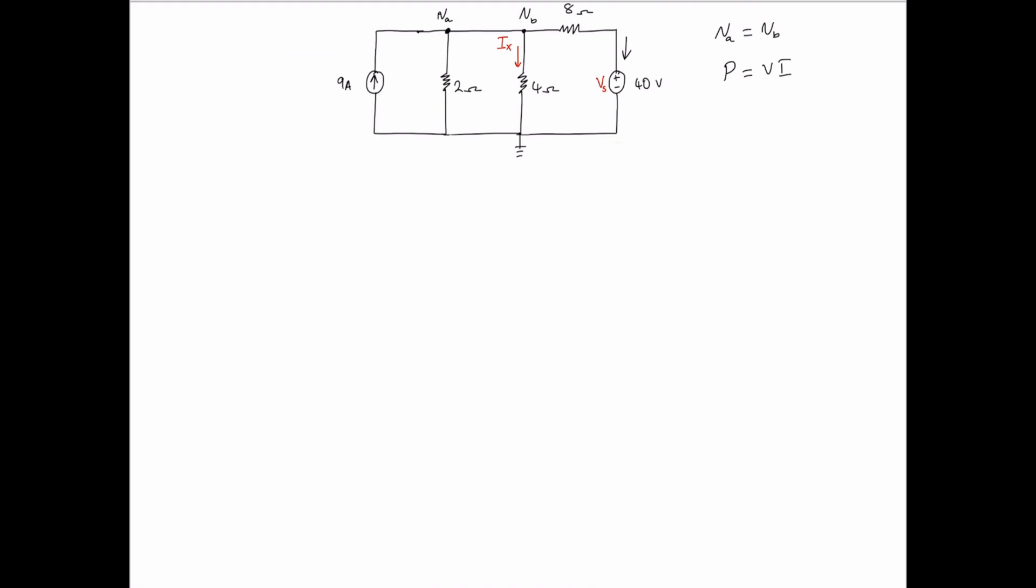And if the current flowing from the source is positive, that means the current flowing into the source is negative. So, let's call that current IRL, current in the right loop.